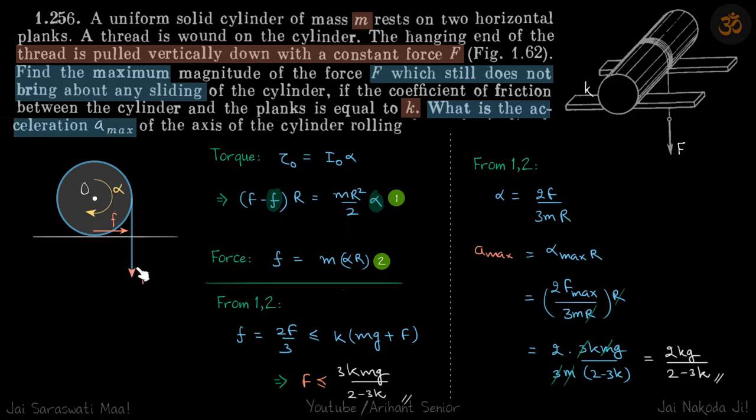And then the force in the x direction—that is only friction—so f = ma, where a is the acceleration of the center. So f = mαR. We have two equations, two variables.